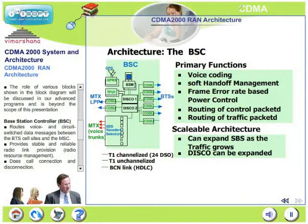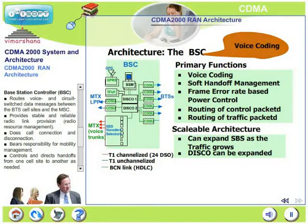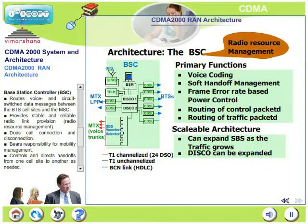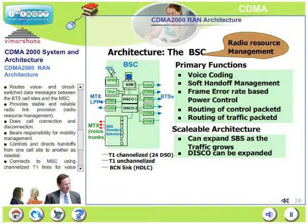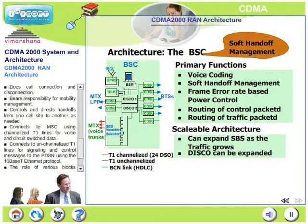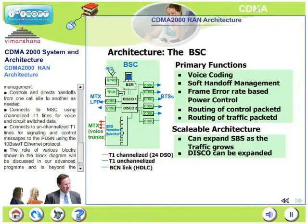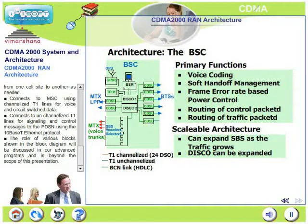Let us look at the BSC, base station controller. The BSC routes voice and circuit data between BTS and MSC, provides stable and reliable radio link provision, and takes care of radio resource management. It handles all connections and disconnections of calls. BSC bears responsibility for mobility management and controls and directs handoffs from one cell site to another. BSC connects to the MSC using T1 lines for voice and circuit switch data, and uses unchannelized T1 lines for signaling and control messages to the PDSN using 10-base Ethernet protocol.